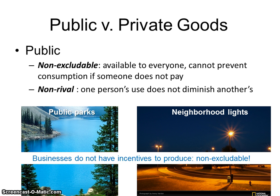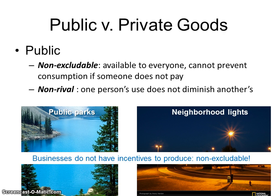With public goods, businesses do not have incentives to produce enough. So if left to the private market, we wouldn't have enough of these things for what's needed in society, because they're non-excludable. Private businesses don't have an incentive to produce things for people that aren't going to pay for them. We call this issue the free rider problem. There are always going to be free riders with public goods — people that don't contribute and still benefit. So the government has to step in and collect tax dollars from everybody to force everyone to contribute to pay for these public goods.